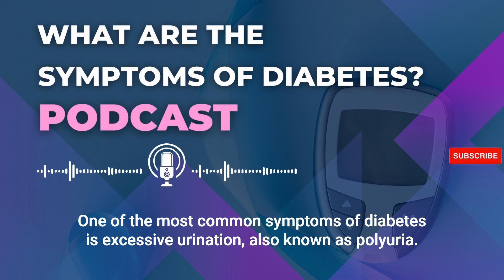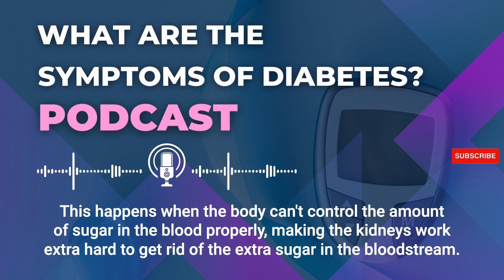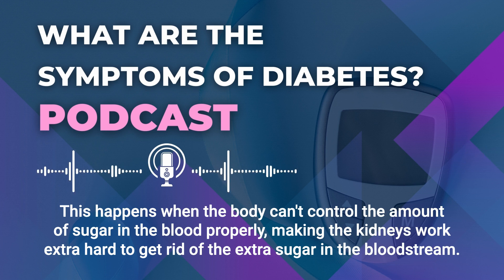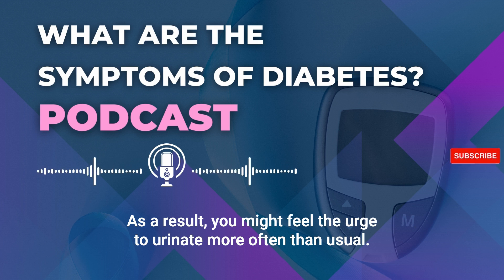One of the most common symptoms of diabetes is excessive urination, also known as polyuria. This happens when the body can't control the amount of sugar in the blood properly, making the kidneys work extra hard to get rid of the extra sugar in the bloodstream. As a result, you might feel the urge to urinate more often than usual.